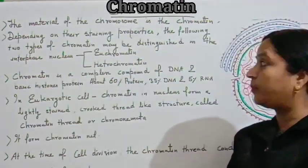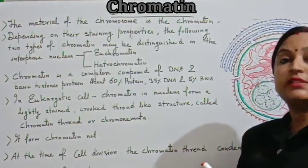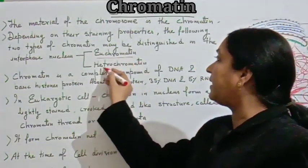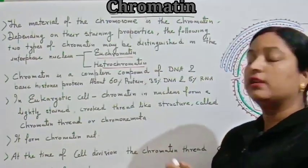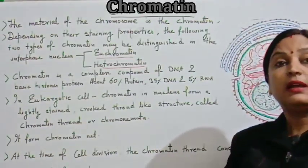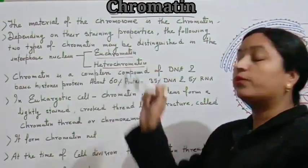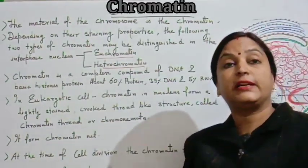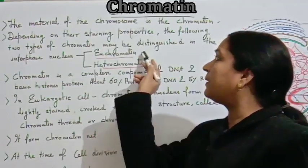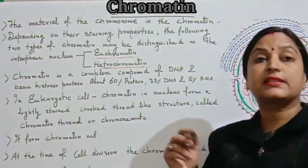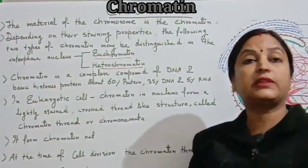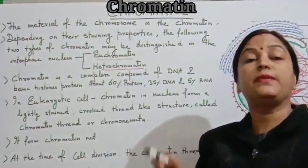These two types of chromatin according to the staining property are euchromatin and heterochromatin. Euchromatin — 'eu' means true — will participate in cell division, or you can say it is genetically or transcriptionally active. Heterochromatin, on the other hand, is not active.